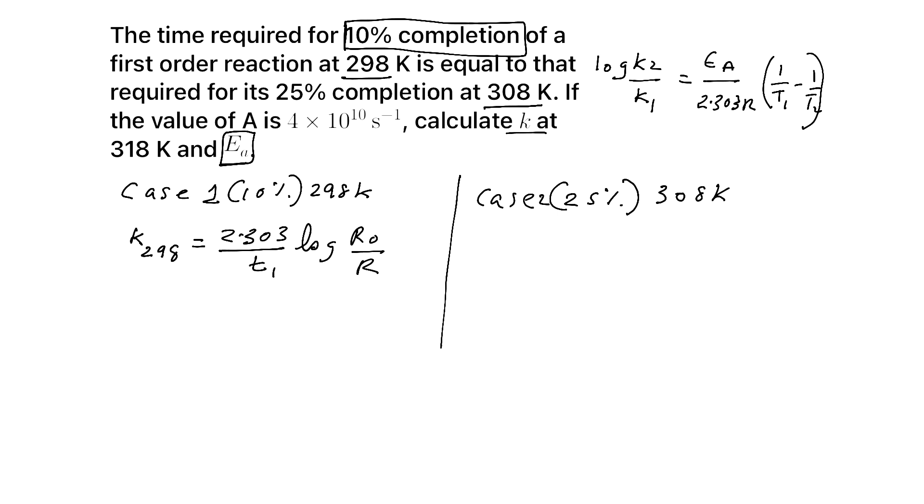It is for 298, so we can write k298. It is 2.303 by t1 log R0 by R. See the completion is given in percentage, 10% completion. So you can take initial concentration as 100. Now what is present concentration? 10% completion means what is left? 100 minus 10, that is 90.